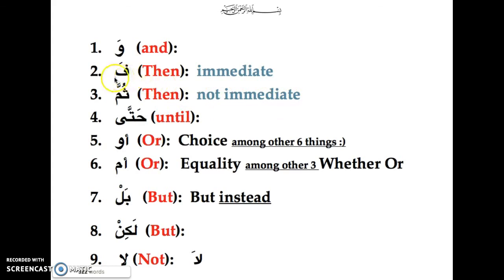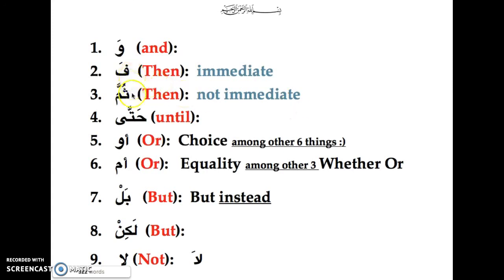فَ means 'then' in an immediate sense — it's happening right after. But when you say ثُمَّ, it means 'then' but not immediately — it could take a year or a while. You're saying it happened after, but not immediately after. So you can see the distinction between those two.